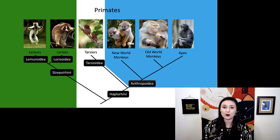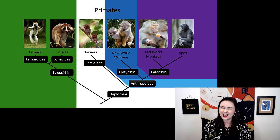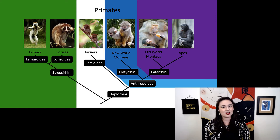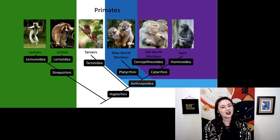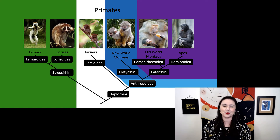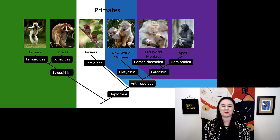Within anthropoidea, we divide that into two more groups — our platyrrhines and our catarrhines. Within catarrhines, we have one more distinction: our cercopithecoids and our hominoids. Again, these are a lot of specialized names. So take a moment and get familiar with this tree, and notice how the common names on top are sometimes similar to the scientific names below.